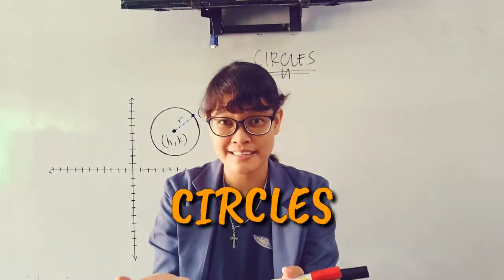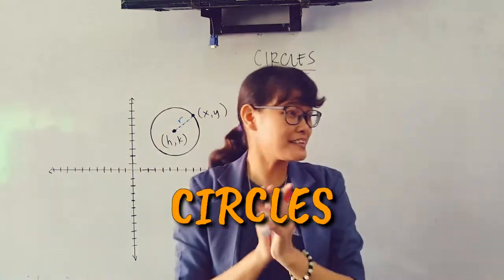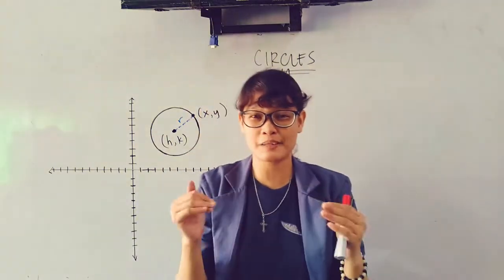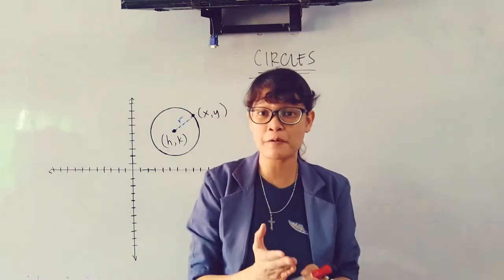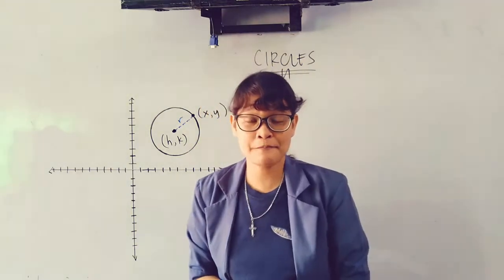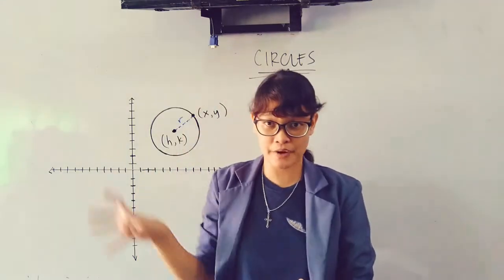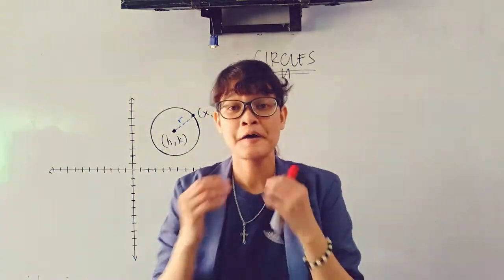So what do you know about circles? A circle is actually defined as a set of points in a plane which are equidistant from a fixed point called the center. And the fixed distance of any point from the center is called the radius.